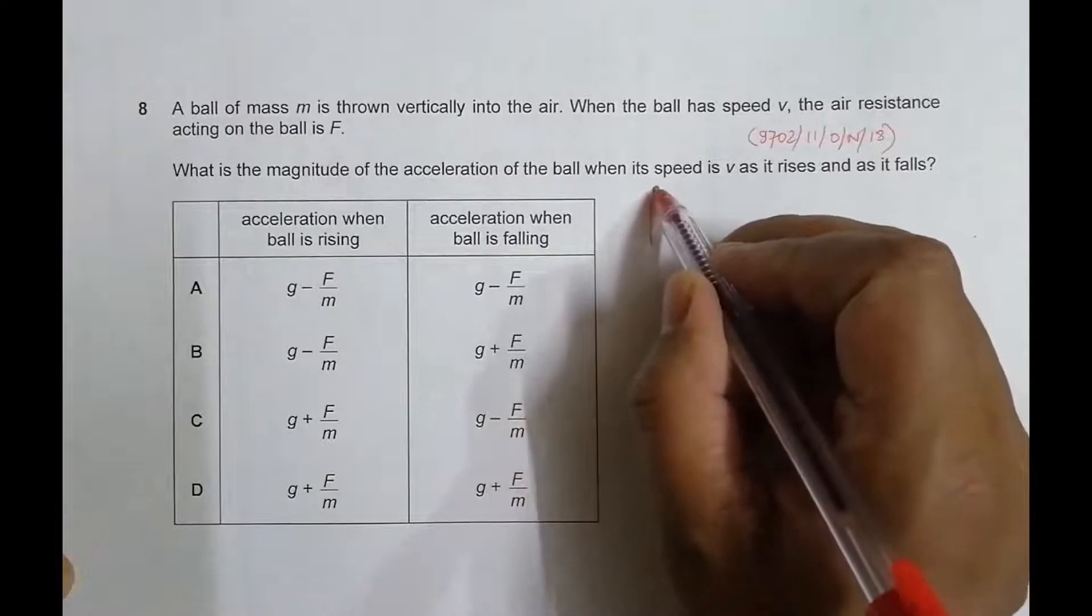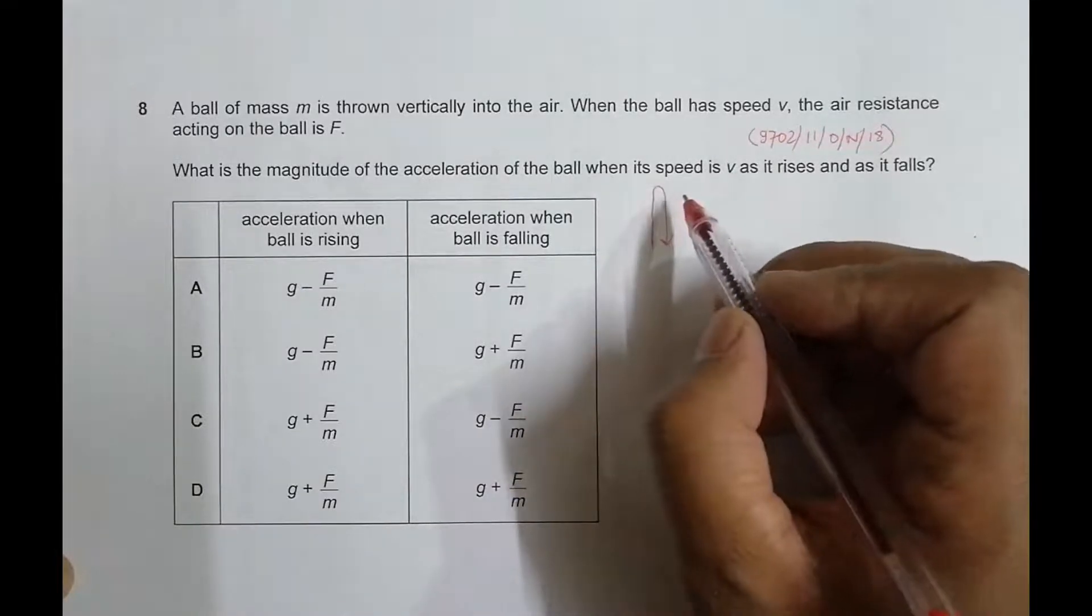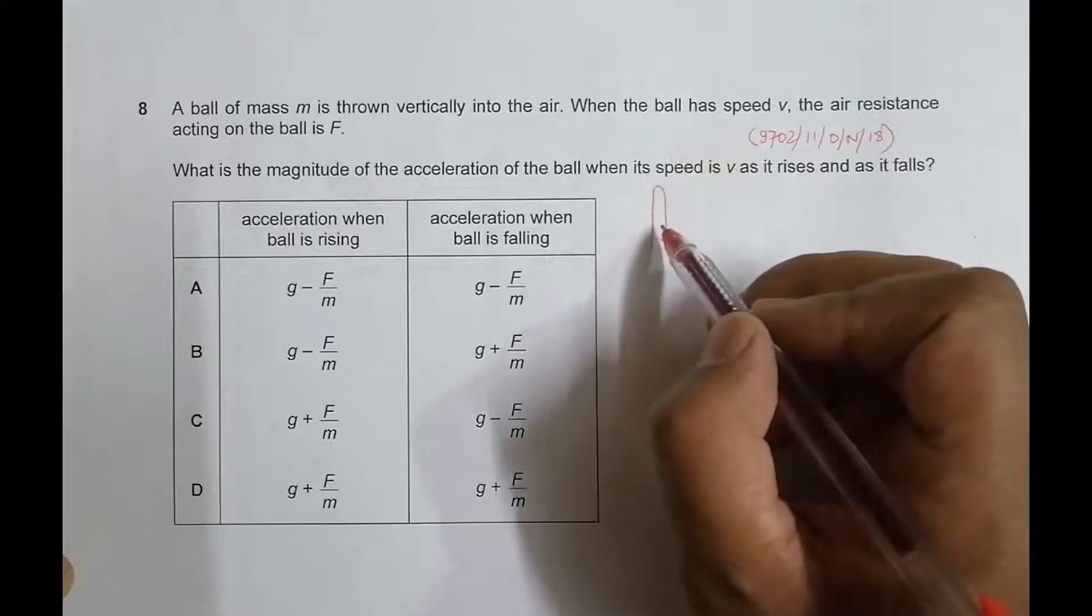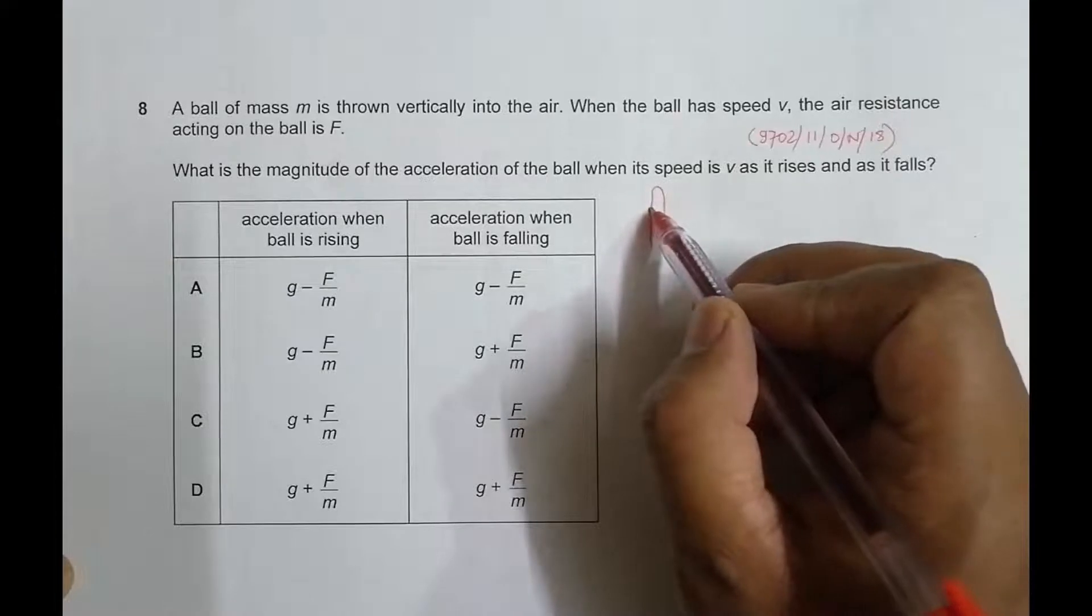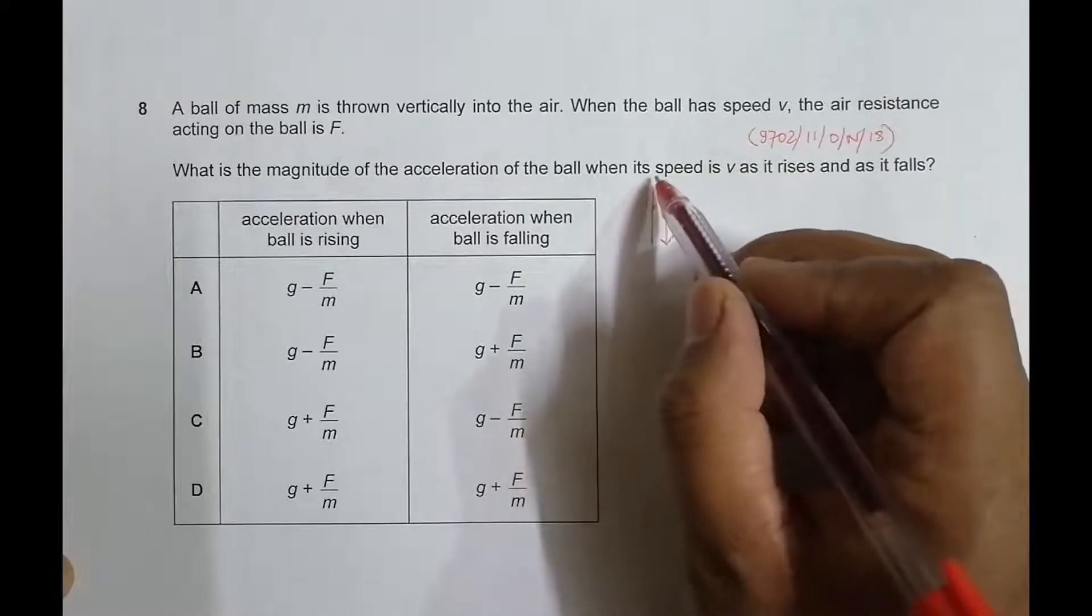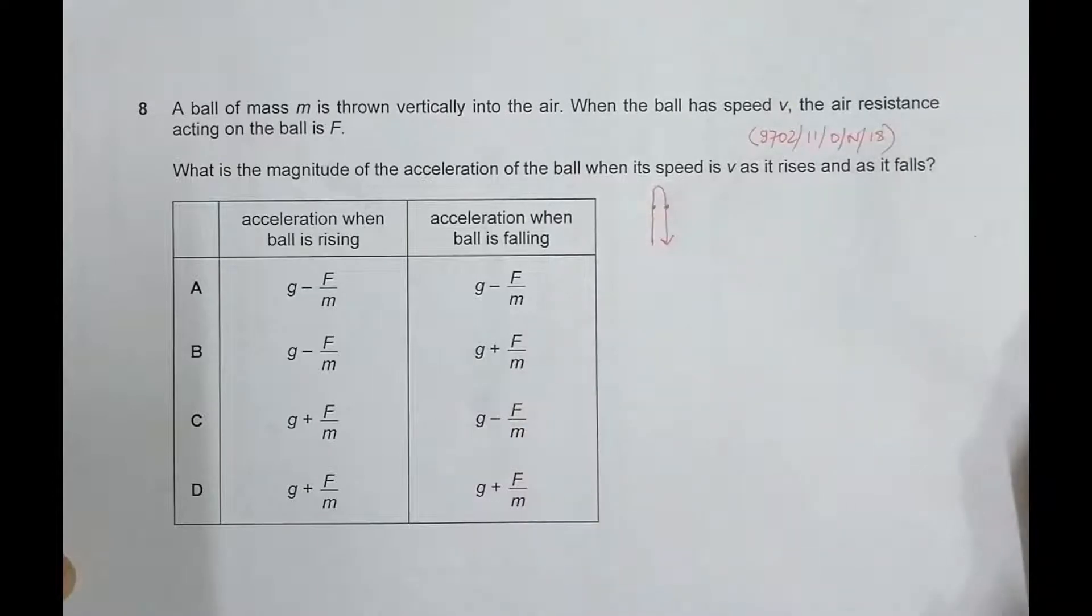Ball is thrown and when it comes back there are two instances when the velocity is the same. So magnitude of velocity is the same. So once when it goes up it might be v somewhere here and when it comes down it might be v somewhere here. So that's what there are two occasions when the ball has speed v.